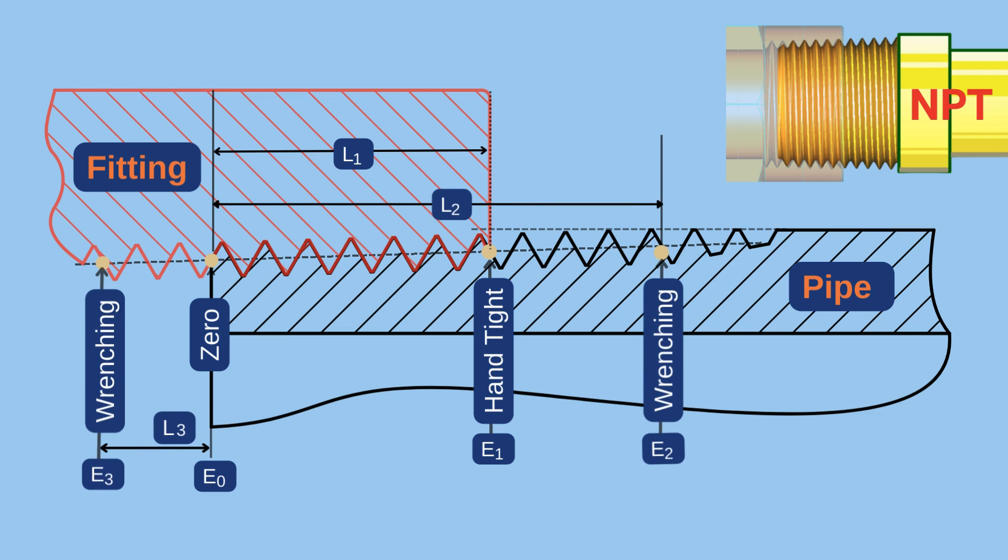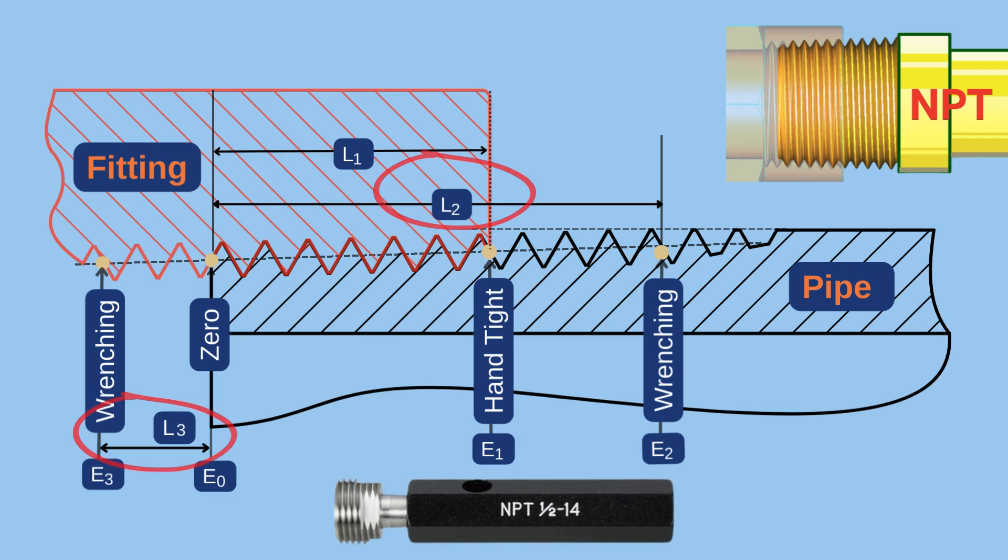L3 and L2 are the minimum and maximum allowed wrenching distances. They are measured with dedicated gauges.